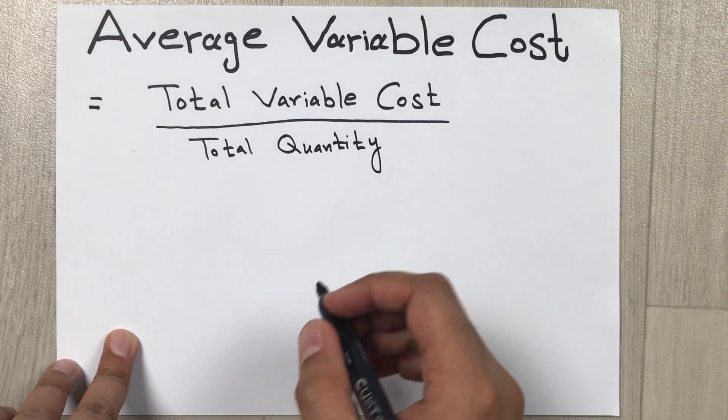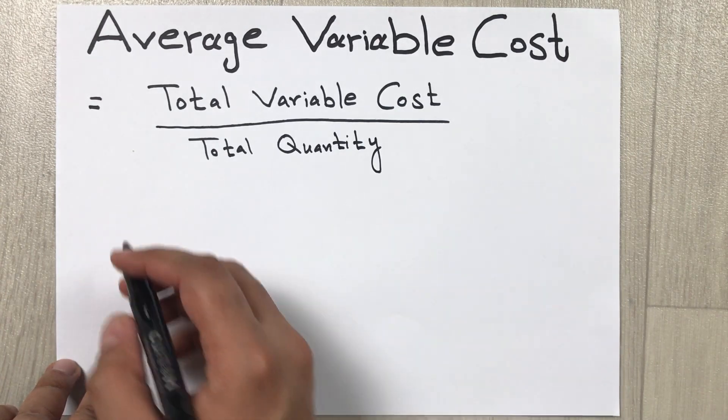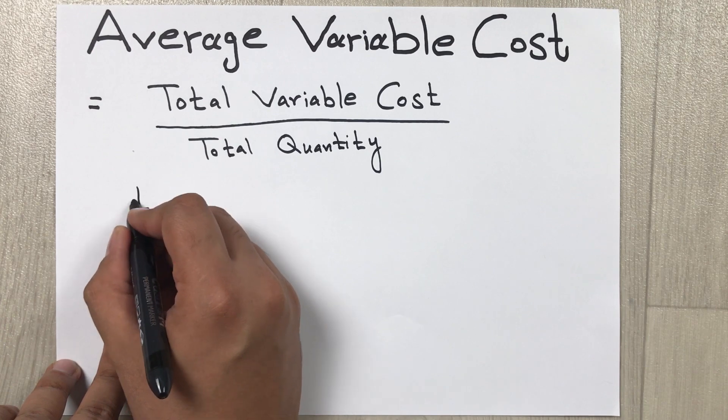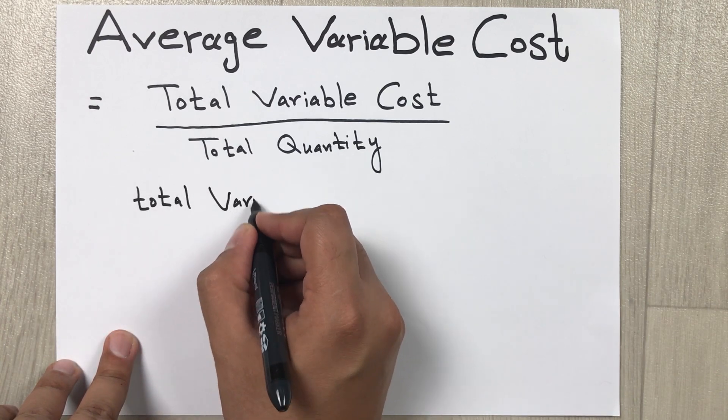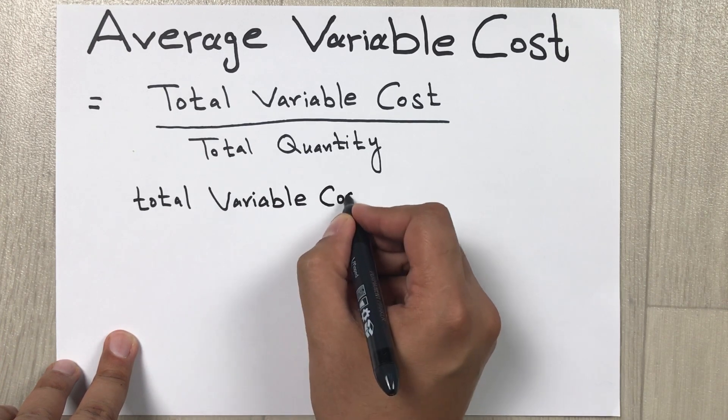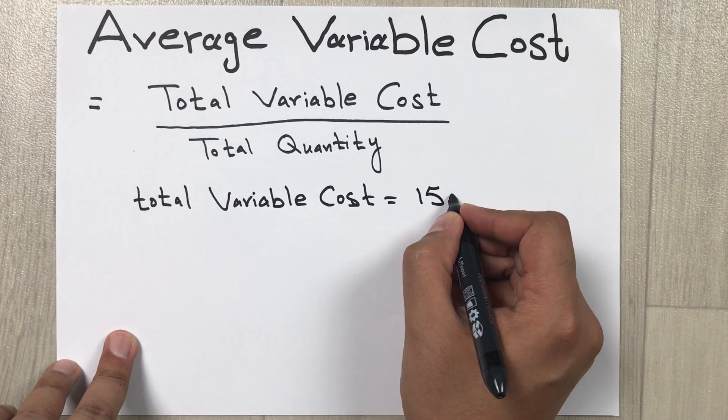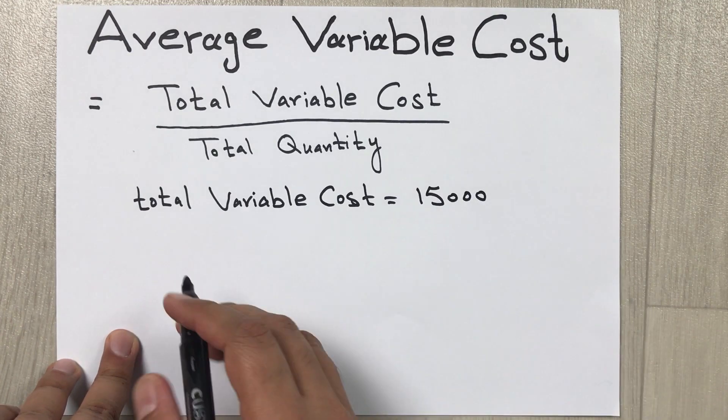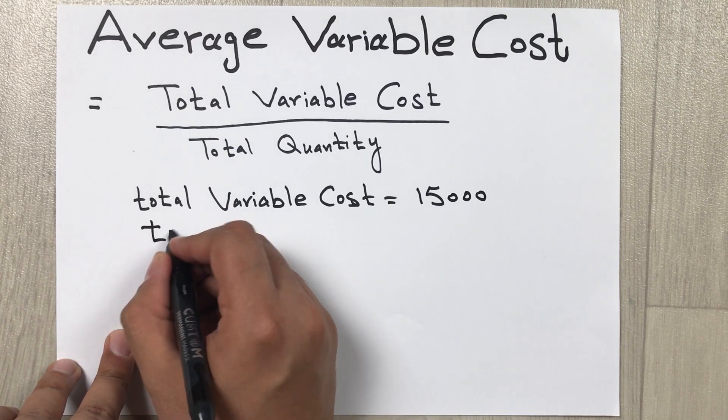Let's say the total variable cost is 15,000 and total quantity is 3,000.